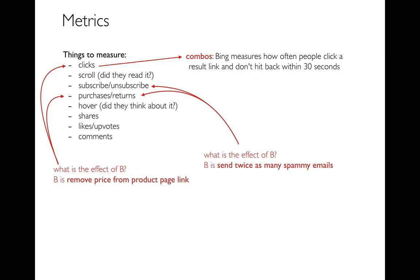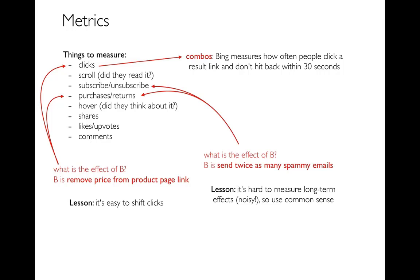Eventually everybody figures out what the price is once they get to the page, and if it's not worth it to them they aren't going to buy it. So if you make a change like this, maybe you get more clicks to the product page but people drop out later. A key lesson from Bing: it's really easy to shift clicks — you can make people click through to your product page, but that doesn't mean they're actually going to buy. They're just going to drop out at various points between visiting the website and actually buying something.